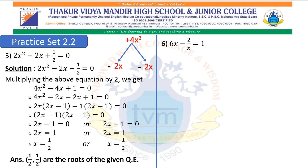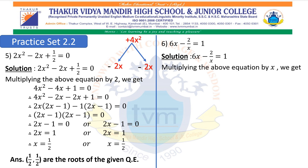Sum number 6: 6x minus 2 upon x equals to 1. Here the denominator is x, so we first remove it. Multiplying the equation by x, we get: 6x squared minus 2 equals to x. This equation is not in standard form, so we arrange it: 6x squared minus x minus 2 equals to 0.